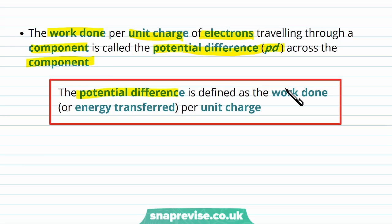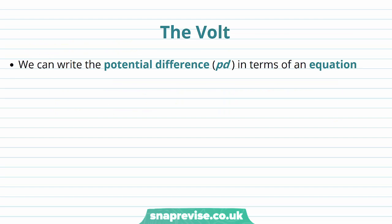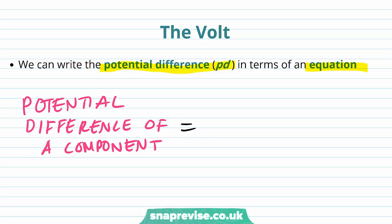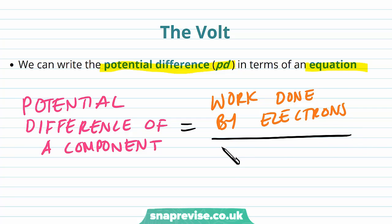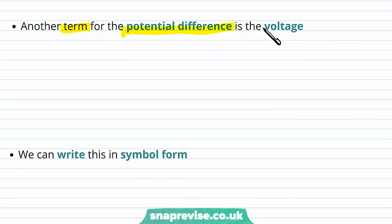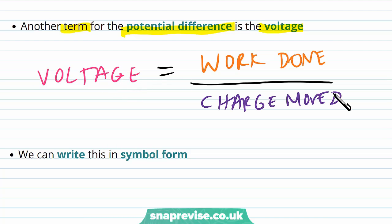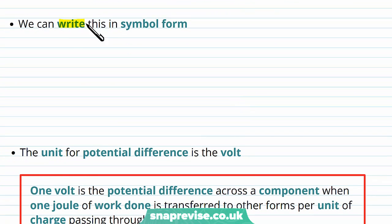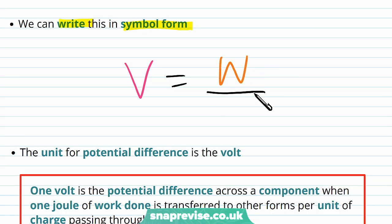The potential difference is defined as the work done or energy transferred per unit charge. We can write the potential difference in terms of an equation: the potential difference across a component is equal to the work done by the electrons divided by the charge moved through the component. Another term for potential difference is voltage, so voltage equals work done divided by charge moved, or in symbol form: V = W / Q.